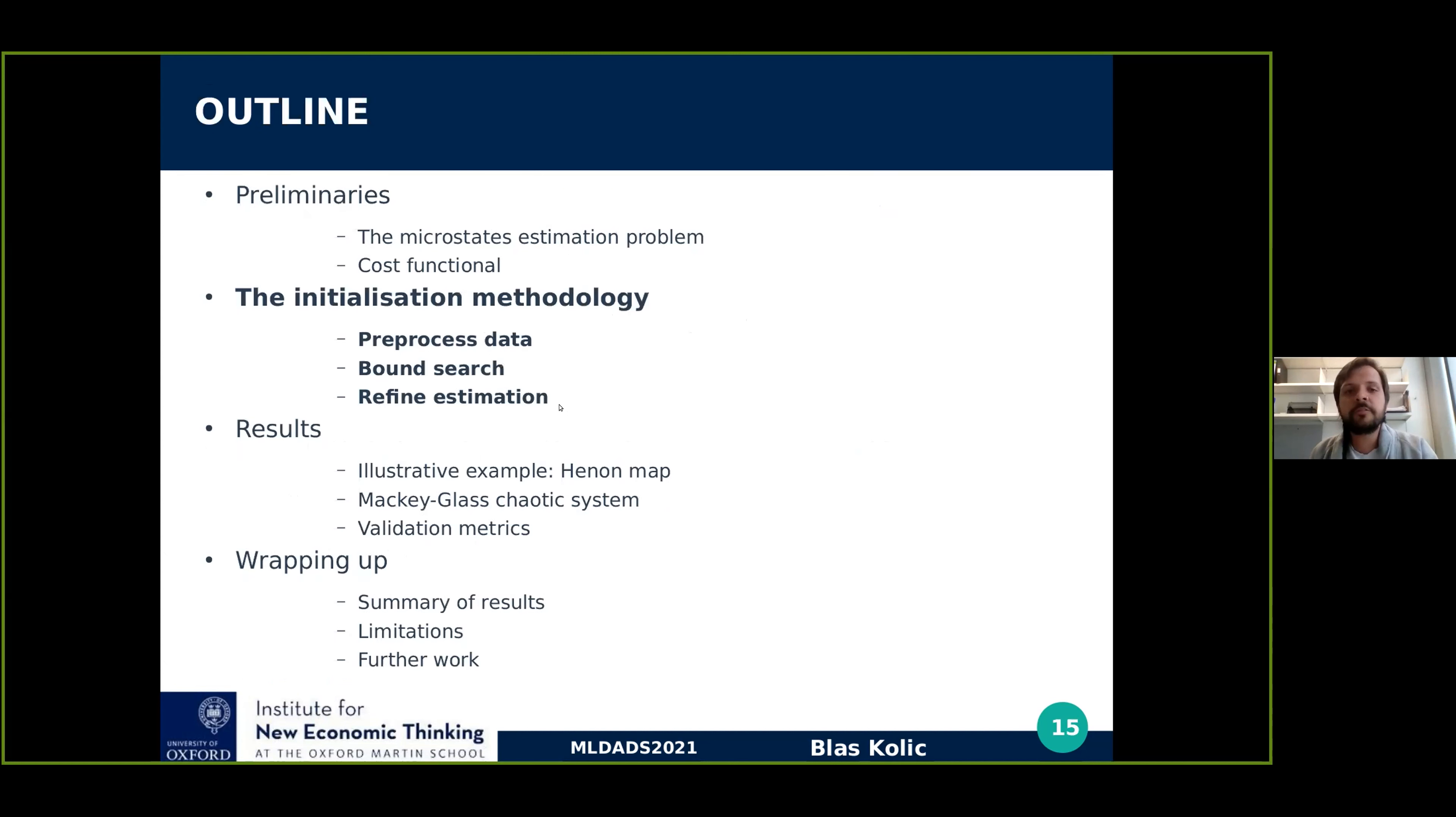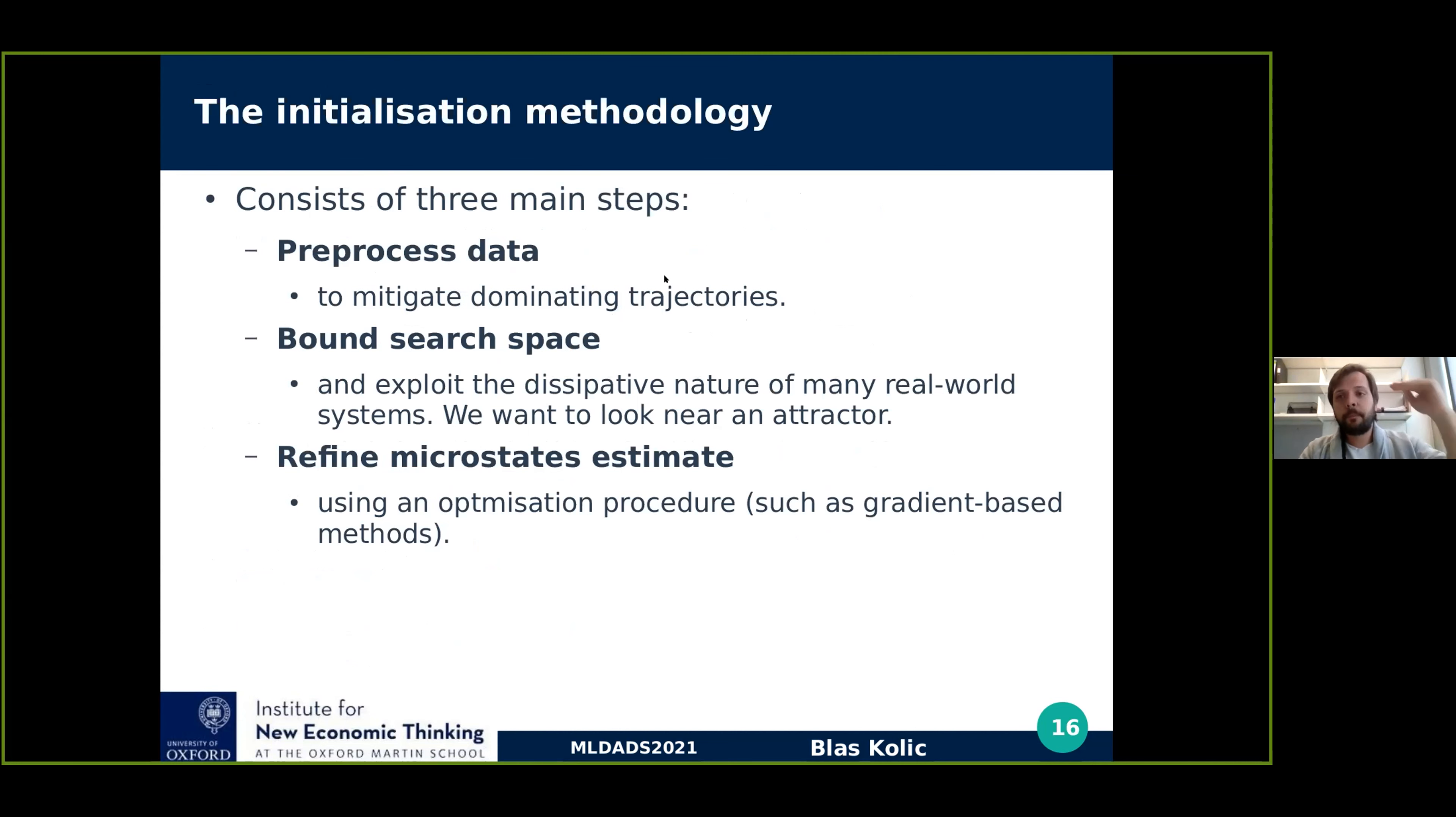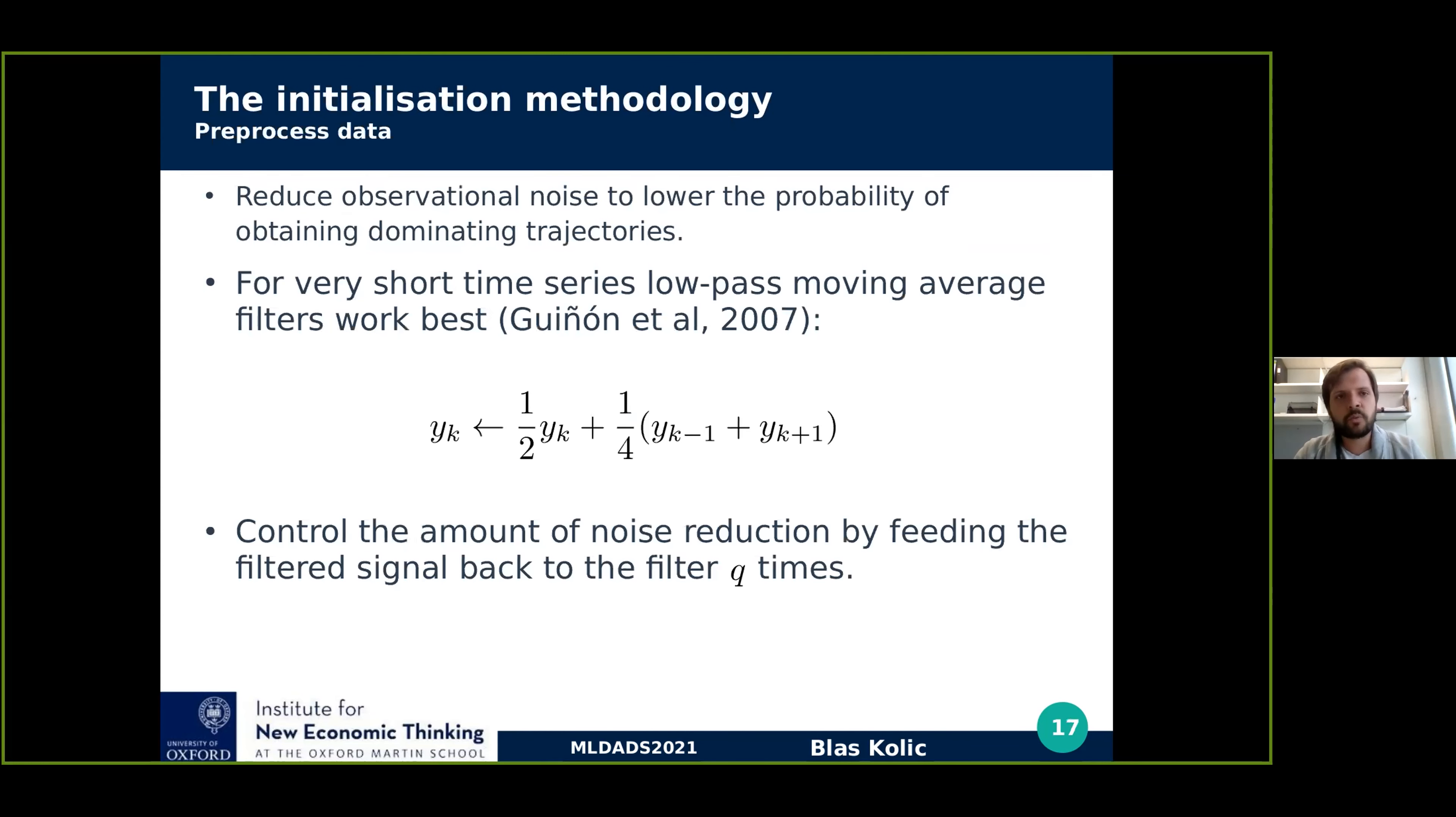This brings me to the methodology, which is a three-step methodology. Basically, we pre-process the data to mitigate dominating trajectories. Then we bound the search space and exploit the dissipative nature of many real-world systems, because we want to look near the attractor of the system. And finally, we refine our estimate using some optimization procedure, which in this case is gradient-based methods.